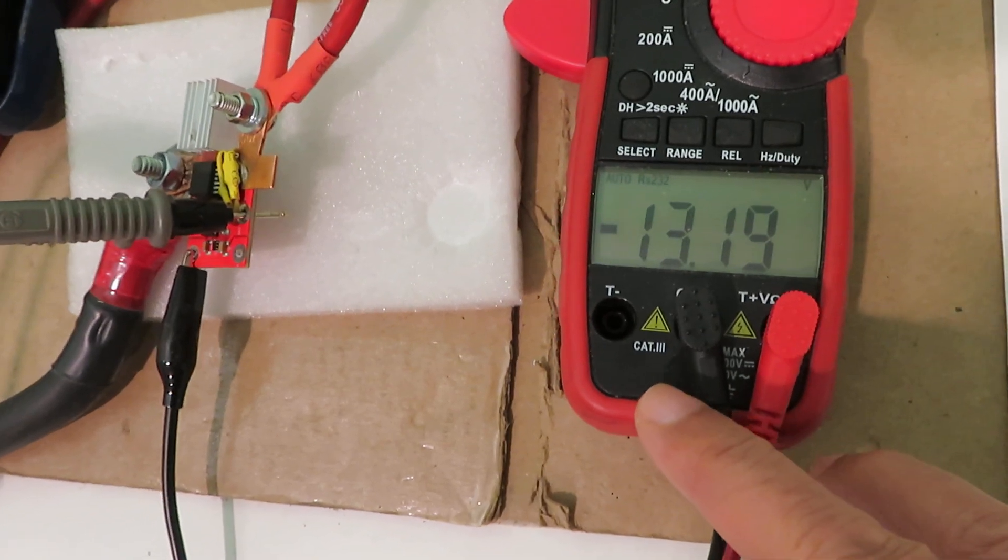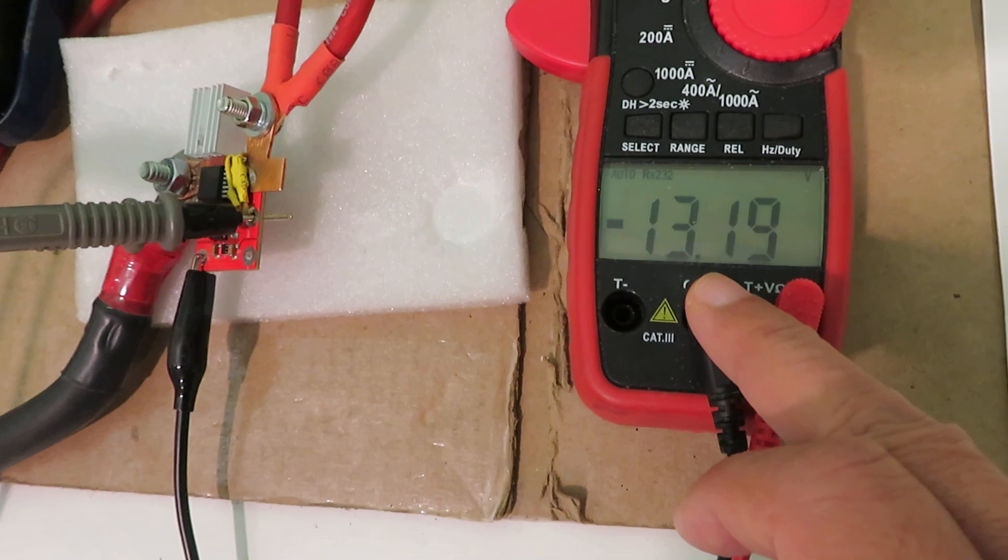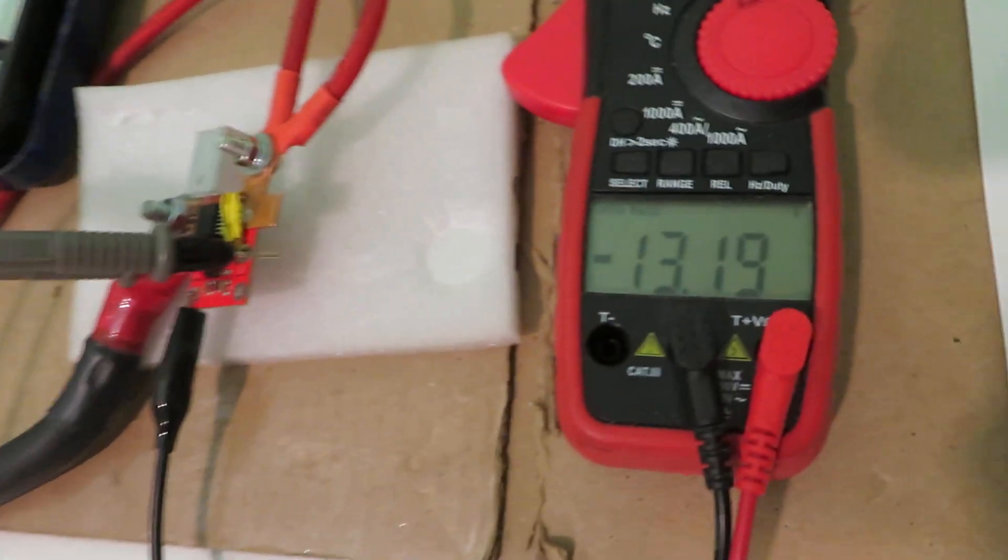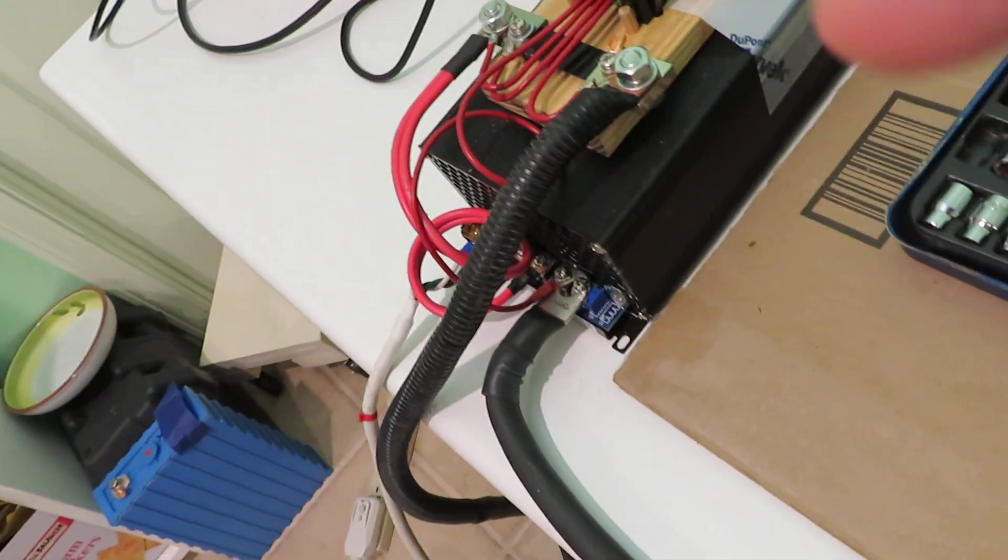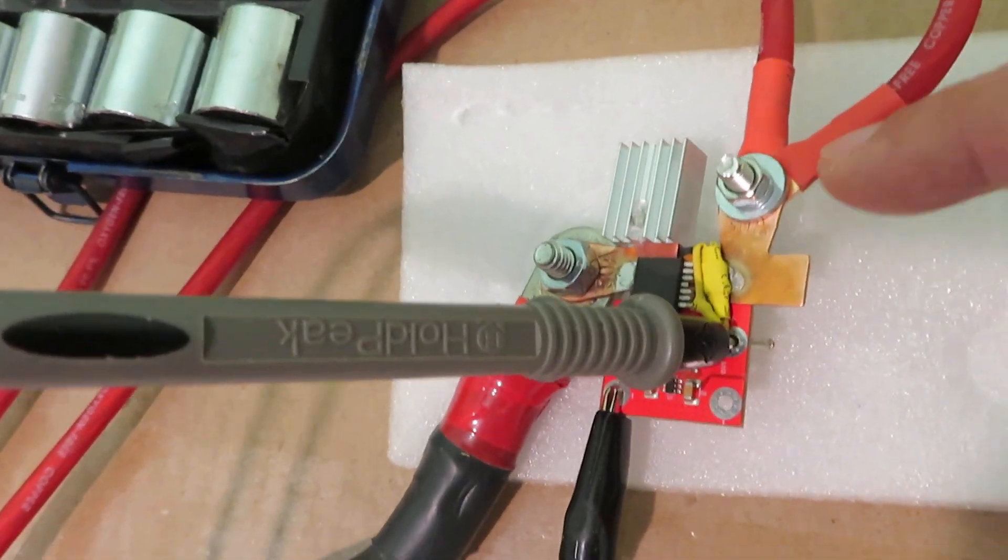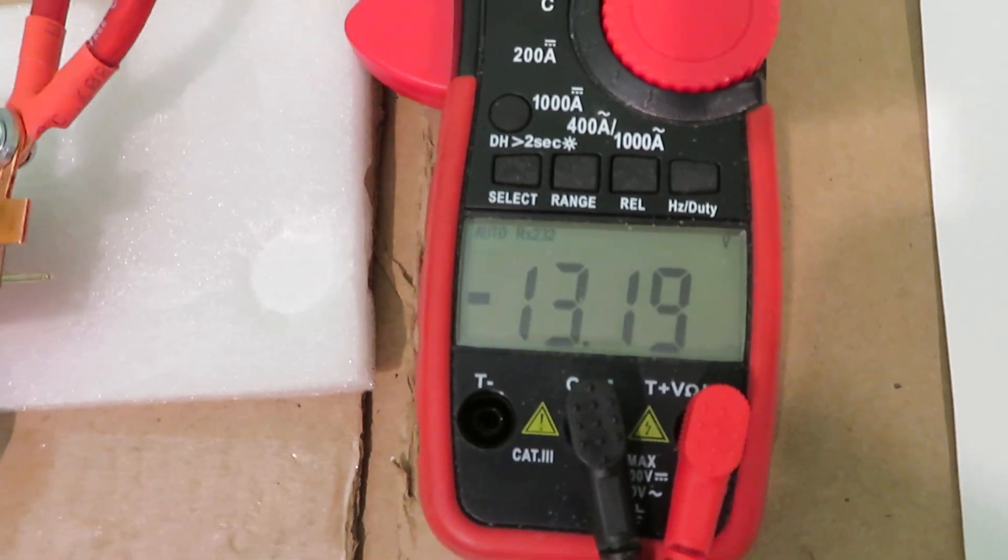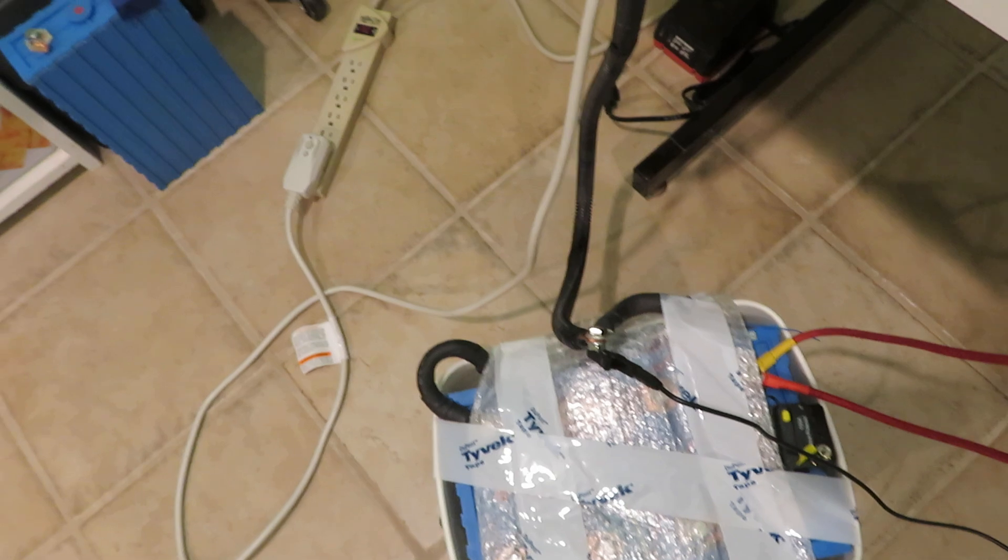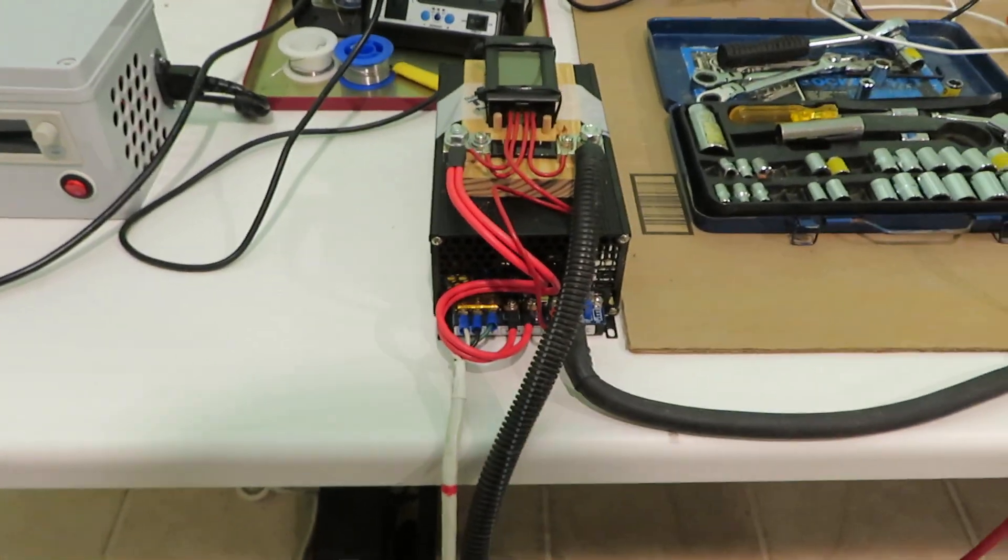The multimeter right now is showing 13.19 volts negative because the MOSFET is turned off. It's measuring the voltage of the battery backward because the positive lead is connected to the input of the power supply. When everything's off, the input goes to the negative of the battery and the output of the ideal diode is connected to the positive of the battery. So it's measuring the negative voltage of the battery at this point. This battery is 200 amp hour. Let me turn on the power supply and see what happens.